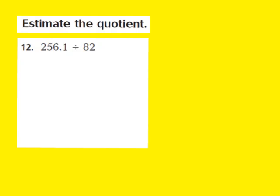Let's look at question number 12. Our job is again to estimate the quotient using compatible numbers. They give us 256 and 1 tenth divided by 82. I'll start by looking at my divisor of 82, and choose a number close to 82 that is easy to work with mentally — I'll turn 82 into 80. I'll list multiples of 80 to find a compatible dividend.